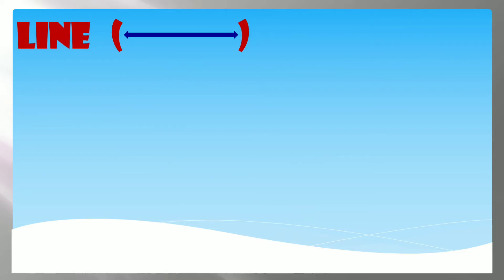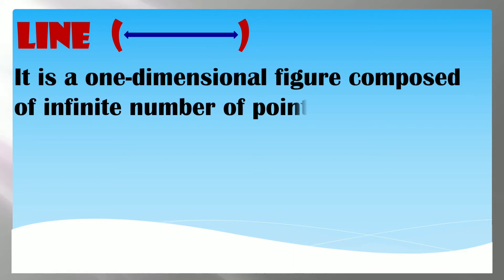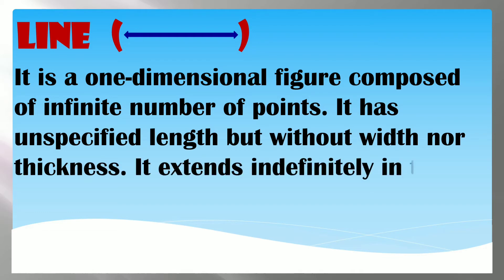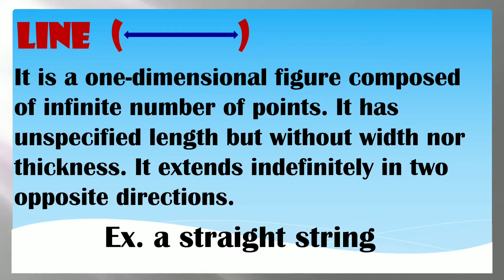Next is line. A line is a one-dimensional figure composed of an infinite number of points. It has unspecified length but without width or thickness. It extends indefinitely in two opposite directions. An example of a line is a straight string.